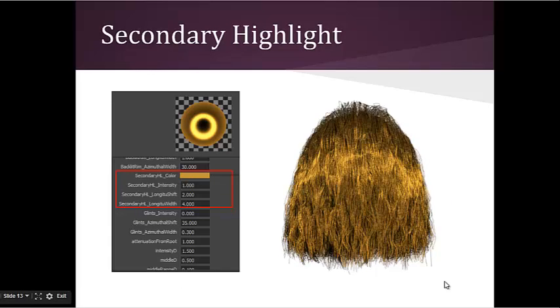The secondary highlight is the lighter highlight of hair when it's lit. The color tends to be closer to the hair diffuse color. Like for the primary highlight, artists can edit the secondary highlight color, intensity, longitudinal shift, and width.